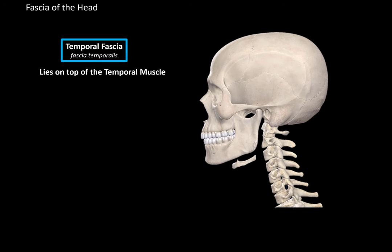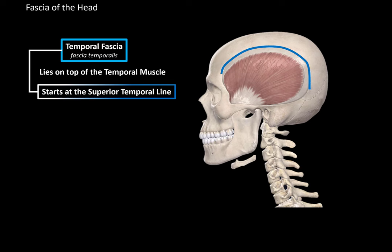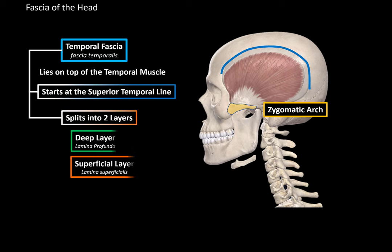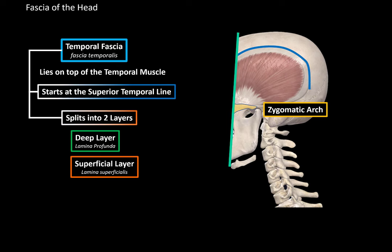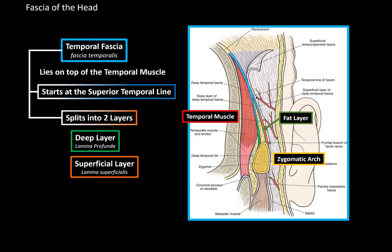We will start with the temporal fascia. The temporal fascia lies on top of the temporal muscle. It starts at the superior temporal line — that's the cranial attachment point — and then goes down towards the zygomatic arch to attach there. This fascia actually divides into two layers just above the zygomatic arch: the deep layer and the superficial layer. Looking at a vertical cross-section, we can see the temporal muscle highlighted, the temporal fascia splitting into deep and superficial layers before inserting at the zygomatic arch, with fat tissue located between the two layers.